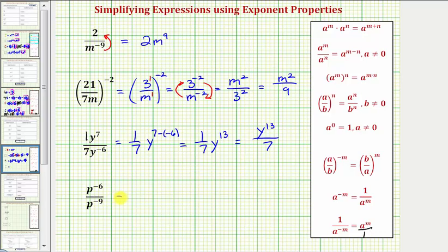And for our last example, the bases are the same and we're dividing, so we subtract the exponents. So we'd have p raised to the power of negative six minus negative nine, which becomes plus nine. So negative six plus nine is equal to three. This simplifies very nicely to p to the third.